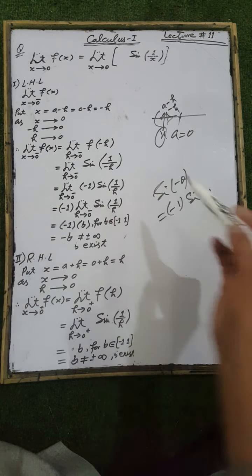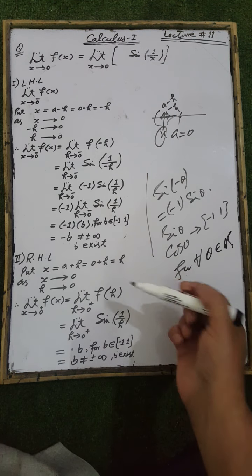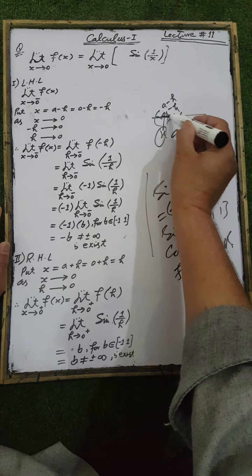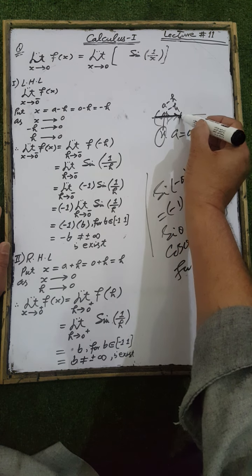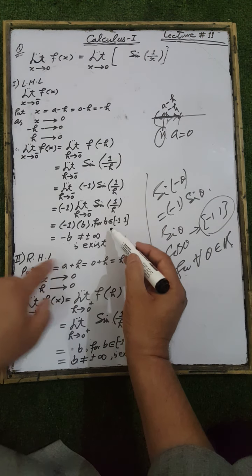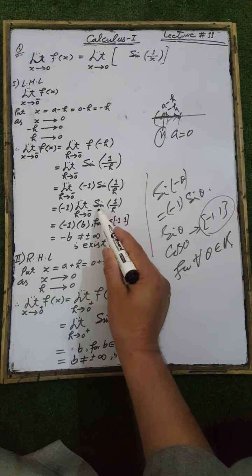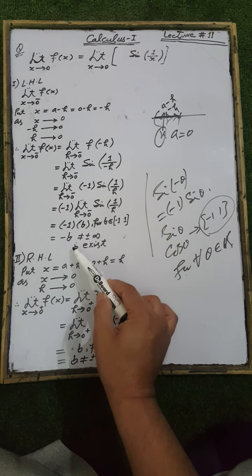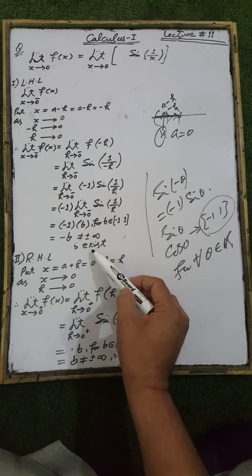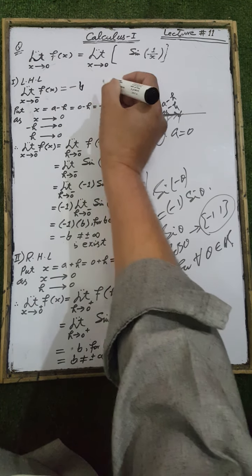The range of sine theta and cosine theta is equal to minus 1 to 1 for each real number theta. When we substitute values from the left side of the neighborhood of point a, these real numbers tend to the point a = 0. The value of sine of 1 over h belongs to the range set of sine theta, which is the closed interval minus 1 to 1. Denoting this value by b, where b belongs to [-1, 1], minus 1 times b equals minus b. Since minus b is not plus or minus infinity, the left-hand limit exists and equals minus b.